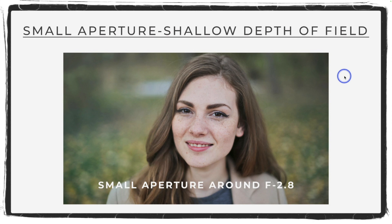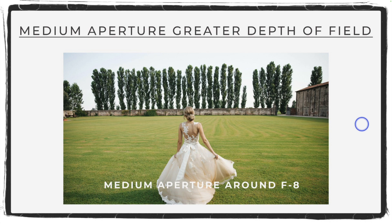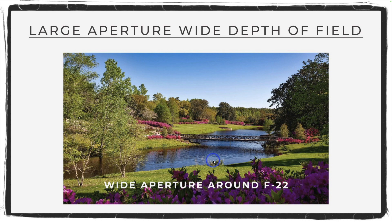Here's a portrait with extremely shallow depth of field — possibly f/1.8, since one eye is sharp and the other is out of focus. This works great for portraiture to throw the background out. A wedding photo shot around f/5.6 or f/8 shows a medium depth of field — subjects are sharp but the background softly fades. A landscape example at f/16 or f/22 shows nearly everything in focus from foreground all the way back.